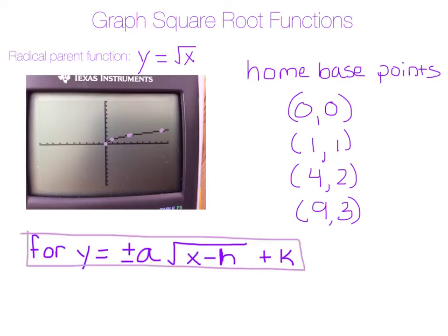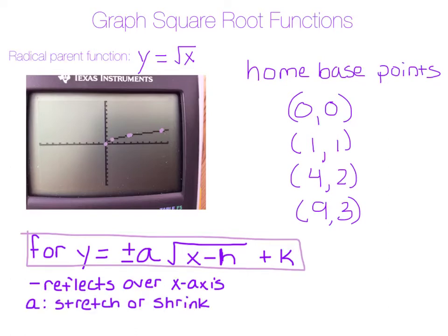For any y equals plus or minus a times the square root of (x minus h), plus k — just like when we did any other function — the plus or minus means if you have a negative in front, it's going to reflect it over the x-axis. The a will be your stretch or shrink, the h will be your horizontal shift and remember it always goes opposite of what the sign is, and k is your vertical shift.